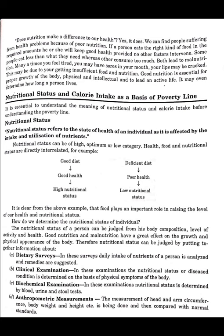Nutritional status of a person can be judged from body composition, level of activity, and health. It can be assessed through: dietary surveys, where daily intake of nutrients is analyzed and remedies are suggested; clinical examination, where nutritional status or disease condition is determined based on physical symptoms; biochemical examination, where nutritional status is determined by blood, urine, and stool tests; and anthropometric measurements, where head and arm circumference, body weight, and height are measured and compared with normal standards.